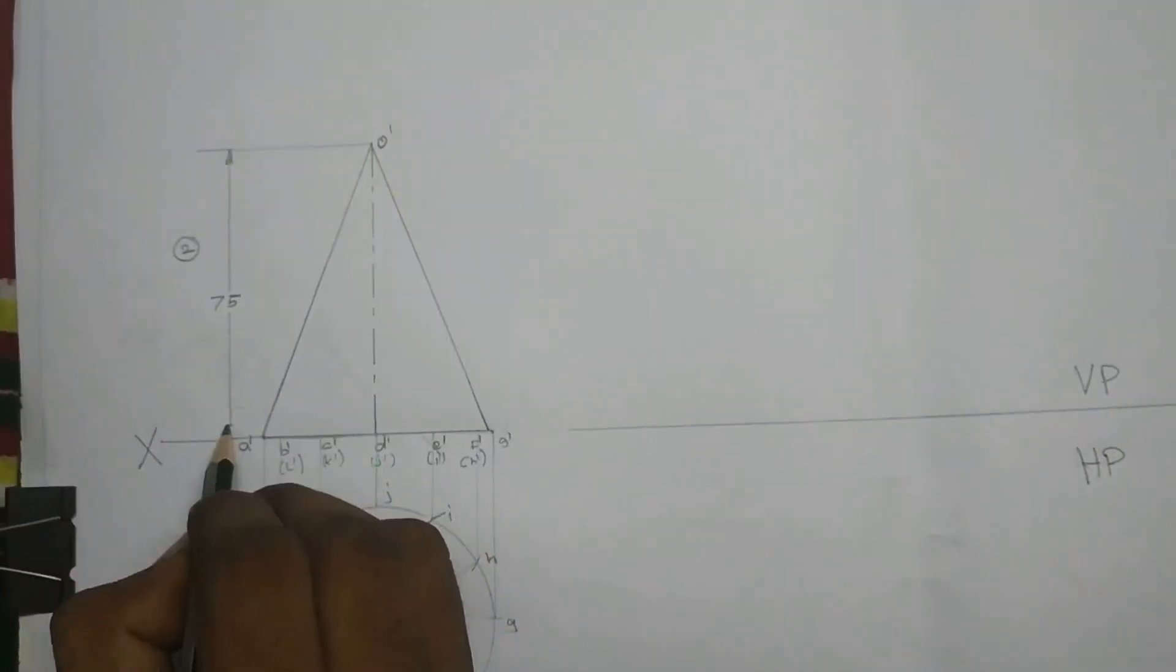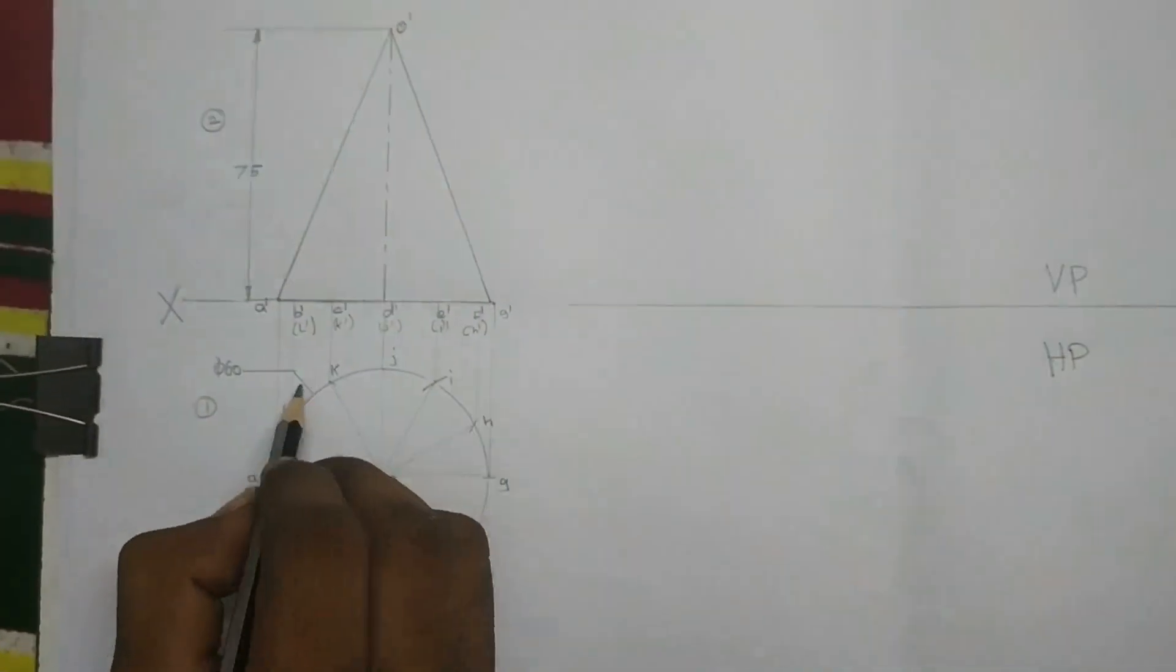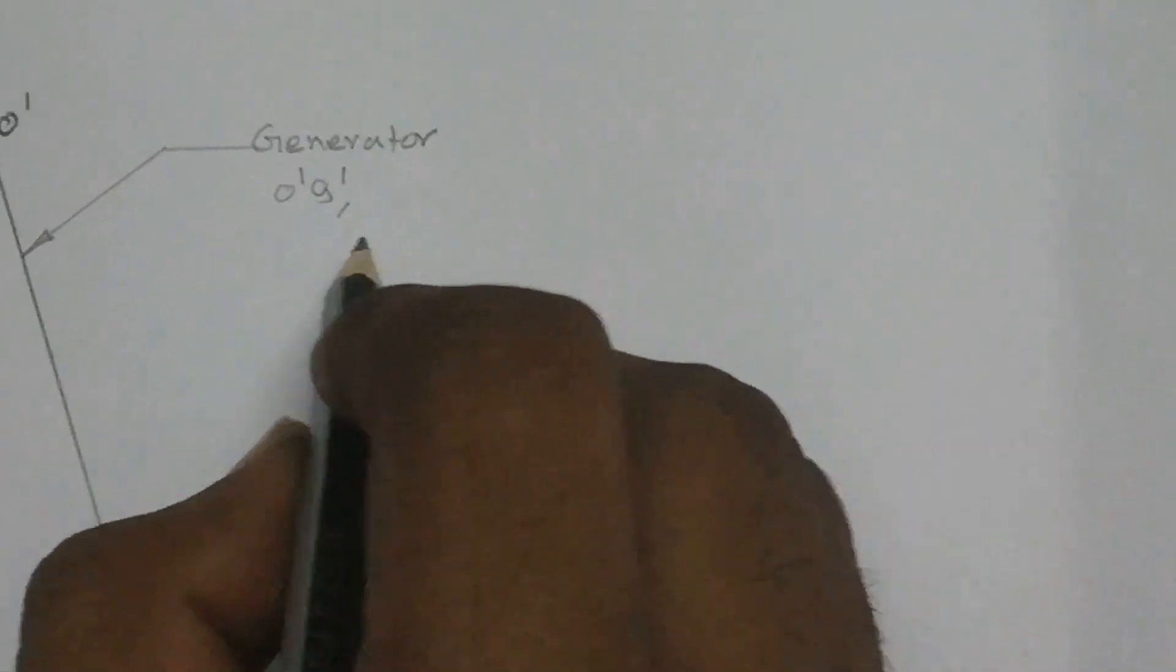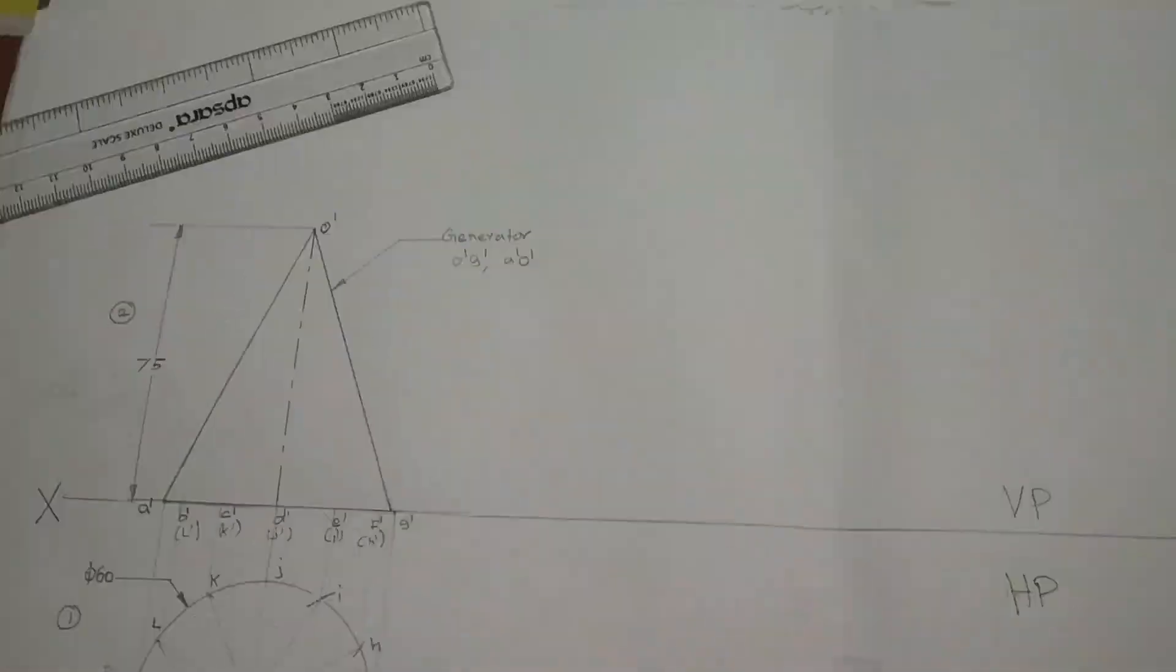O dash to G dash, and O dash to A dash is a generator. Here the given condition is that generator has to lie on HP.